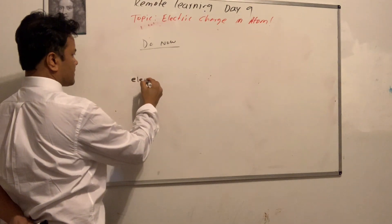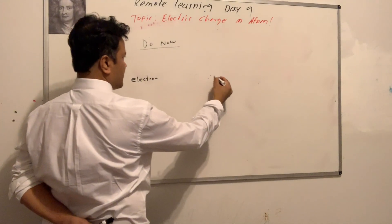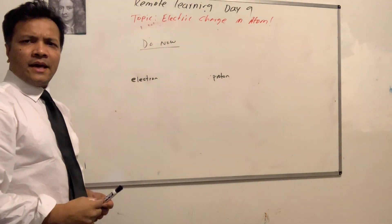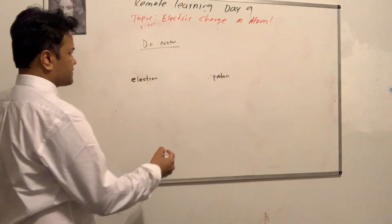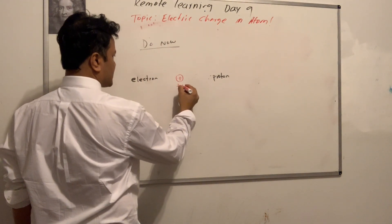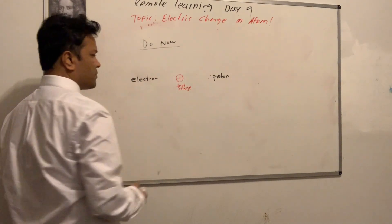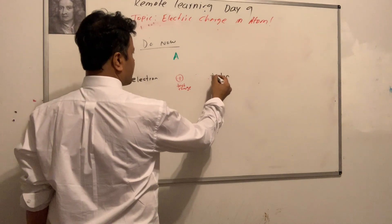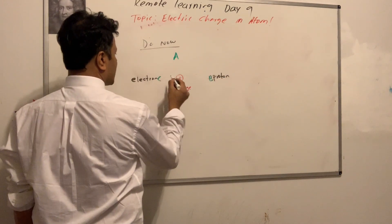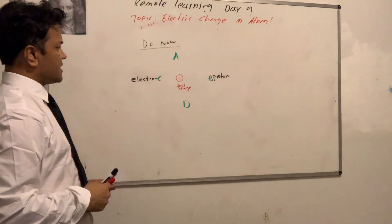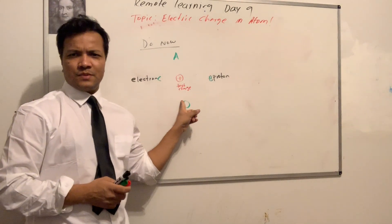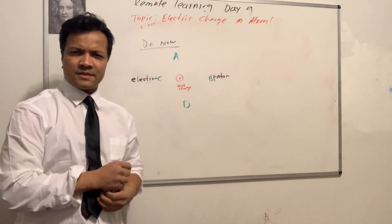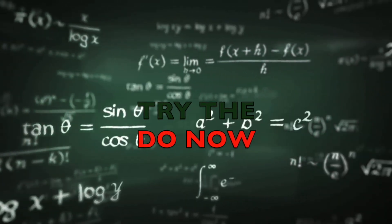I have an electron here and a proton over here. In the middle I have a texture. I'm going to put four different locations: location A, location B, location C, or location D. My question is: which way is this texture going to move? Is it going to move to location A, location B, location C, or location D? Pause your video and try it yourself.